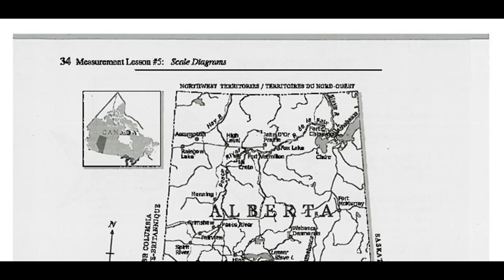Here we've got a map of Alberta with a legend on the side showing a line scale factor. This line scale factor tells us that if I measure from one end to the other, that is 1 centimeter in length, and that represents 75 kilometers. So our line graph scale is: 1 centimeter equals 75 kilometers in real life.